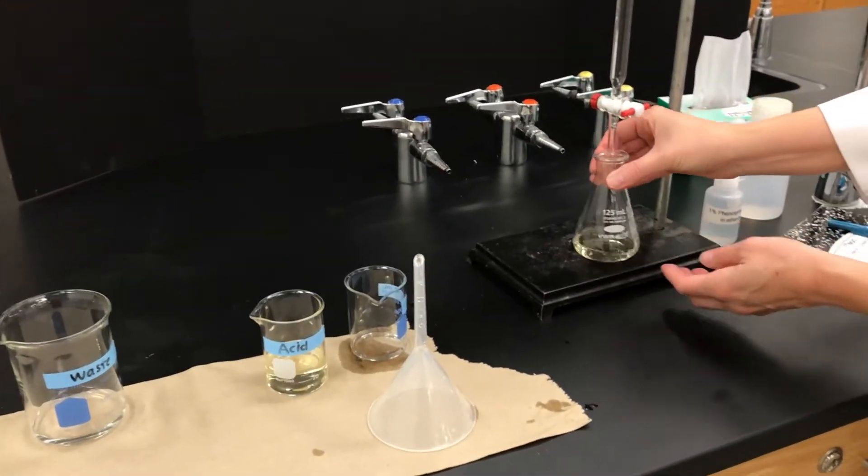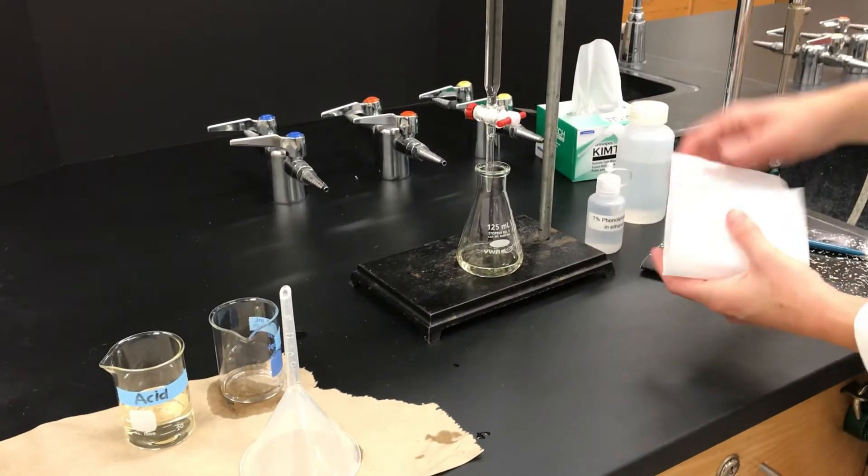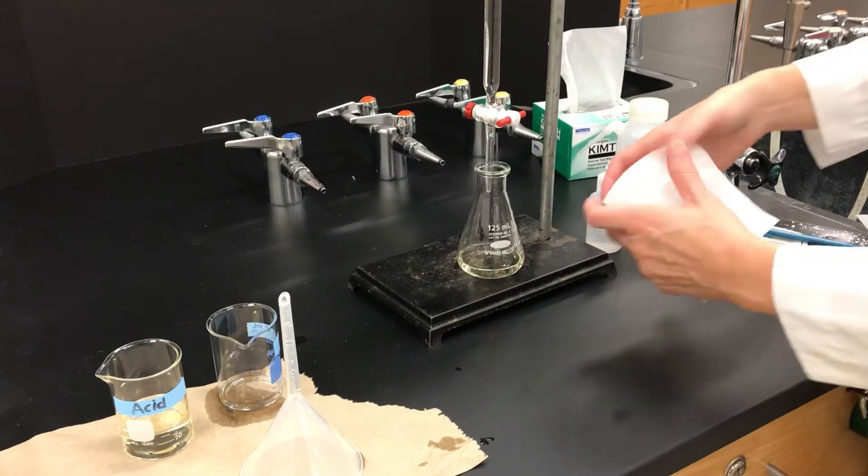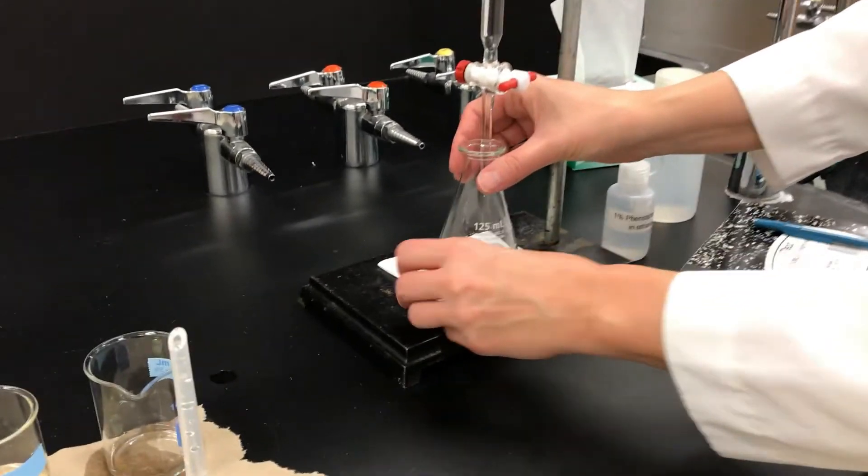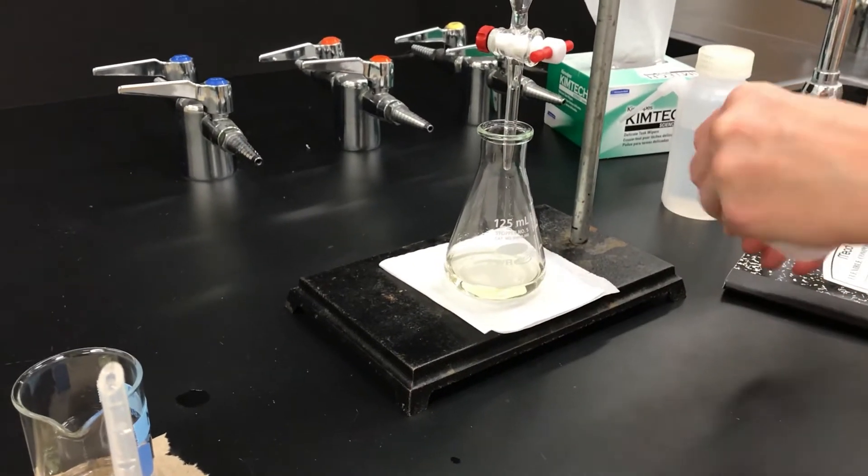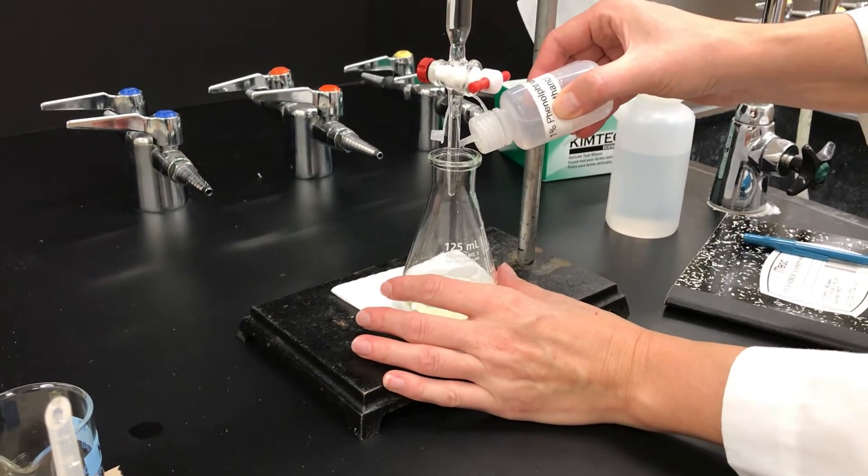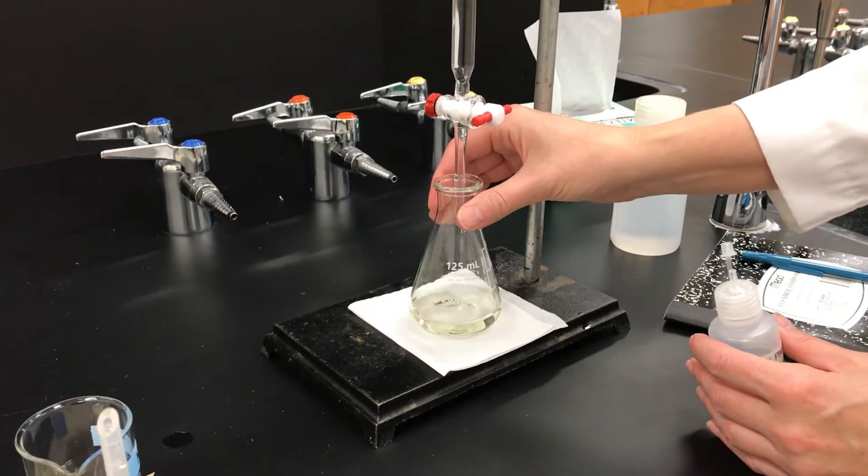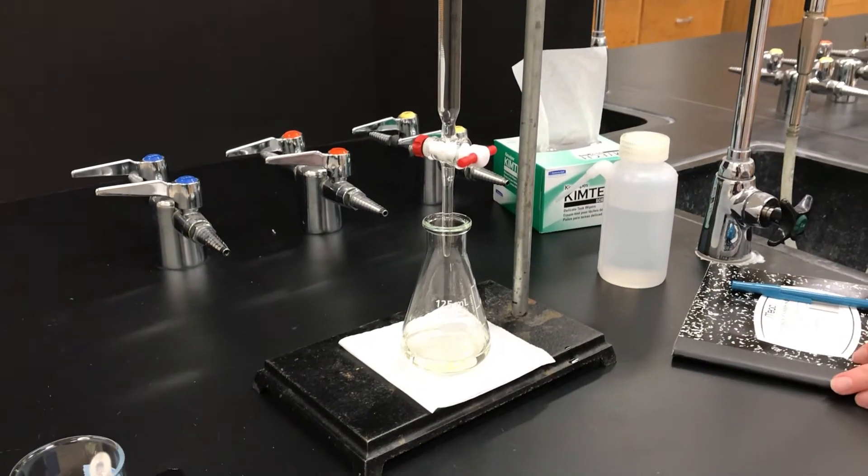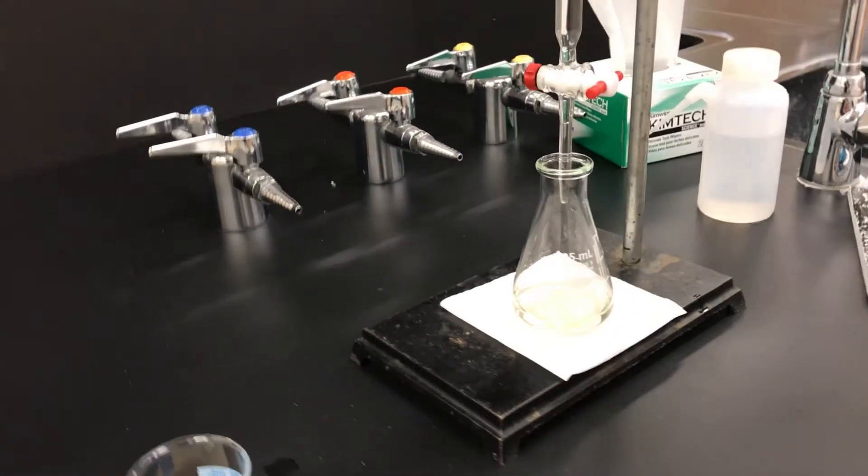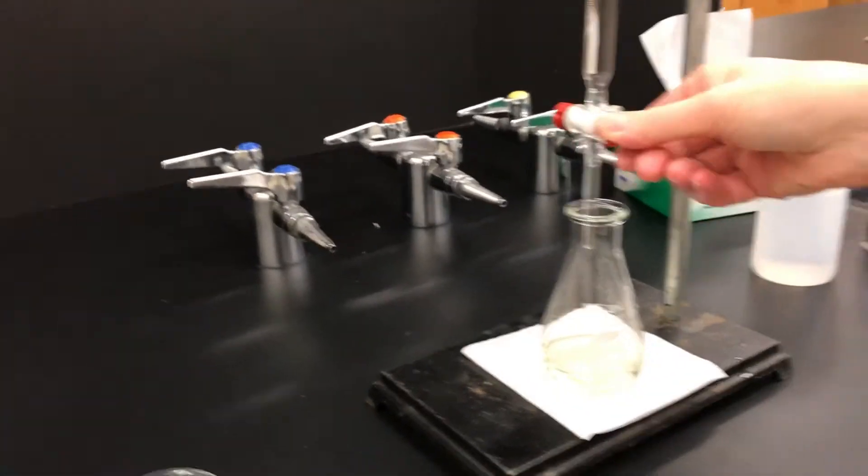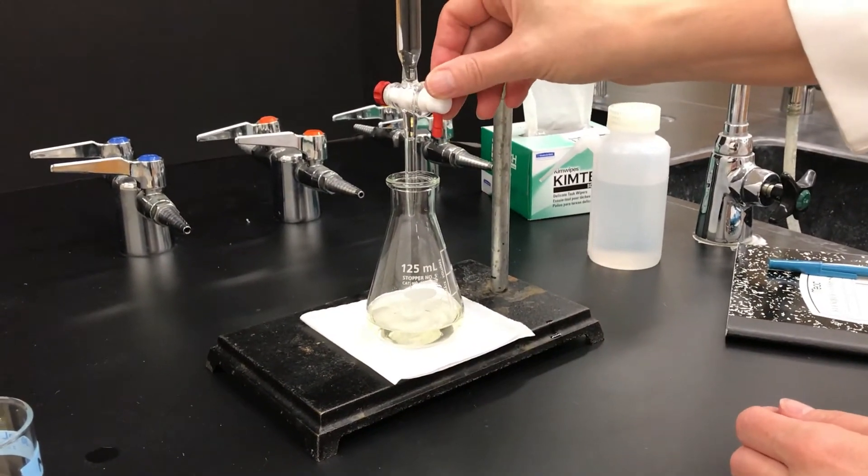Here is our acid that we're going to titrate and the endpoint for the titration is going to be a light pink color which is pretty hard to see against a black background, so we put a white piece of paper or Kimwipe underneath. What I'm adding here is the phenolphthalein indicator. If you don't add that you're not going to get a color change at all and so you won't even know when the titration is over. A couple drops works.